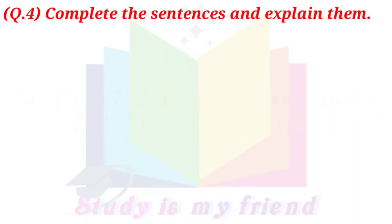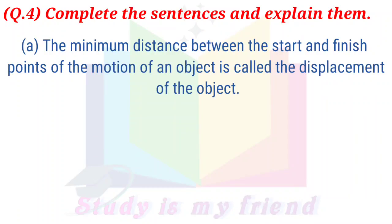Question 4. Complete the sentences and explain them. A. The minimum distance between the start and finish points of the motion of an object is called the displacement of the object.